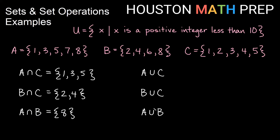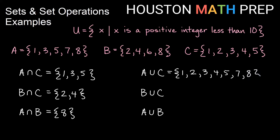Now for unions. You can think of union as 'or', but remember it can also mean in both. So A union C means in A or in C or both — we include everything we see. C has 1 through 5, so we write those down to keep them in order: 1, 2, 3, 4, 5. Then what else is in A? We also have 7 and 8 beyond those. So those are all of the elements that exist somewhere in A or in C or in both.